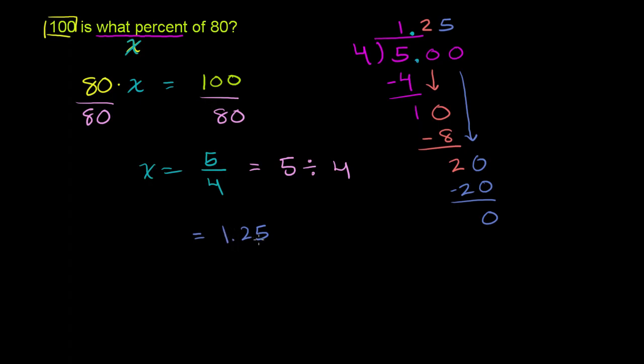So to write it as a percent, you literally just have to multiply this times 100, or shift the decimal over twice. So this is going to be equal to, as a percent, if you just shift the decimal over twice, this is equal to 125%.